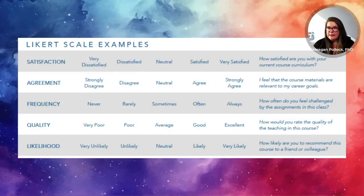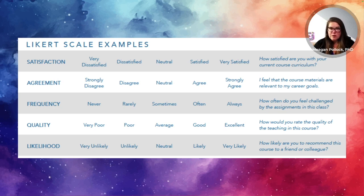If you're curious about Likert scales, there are many different kinds. You can measure satisfaction, agreement, frequency, quality, or likelihood. All of them include a neutral midpoint for stronger data.